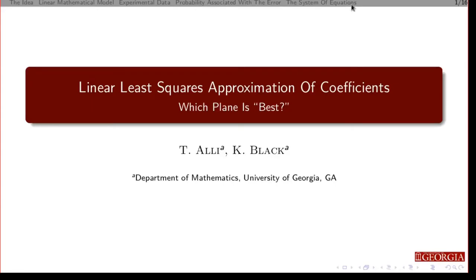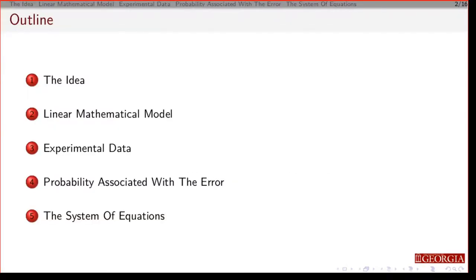I'm going to give some background information on this method we're using to approximate the best fit for some coefficients. This is going to be very different from the book — it's more of a statistical or probabilistic point of view, but it gives a better idea of where this is coming from and how it was originally developed. We'll talk about a linear model, experimental data, the probability associated with the error, and how to build a system of equations. We won't finish that here — that will be for a separate video.